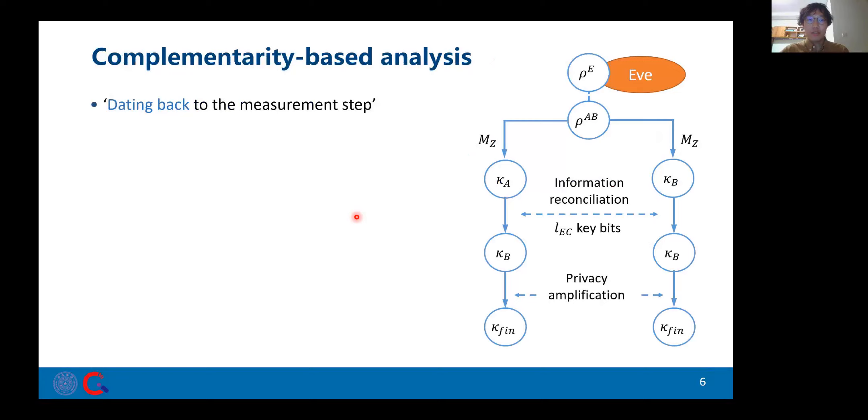A successful practice in common QKD analysis is the complementarity approach. And here, let us look at a typical QKD protocol. Legitimate users, which we call Alice and Bob, first share a quantum state that may be correlated with eavesdropper's information, which we regard as Eve. Then Alice and Bob first measure their state and obtain raw keys kappa-A and kappa-B. Then they reconcile their keys to kappa-B, making their key strings identical.